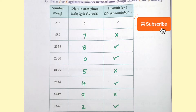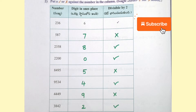Put a tick or cross against the number in the columns. 236 — last digit 6, divisible by 2. 587 — last digit 7, not divisible by 2. 2358 — last digit 8, divisible by 2. 2200 — last digit 0, divisible by 2.